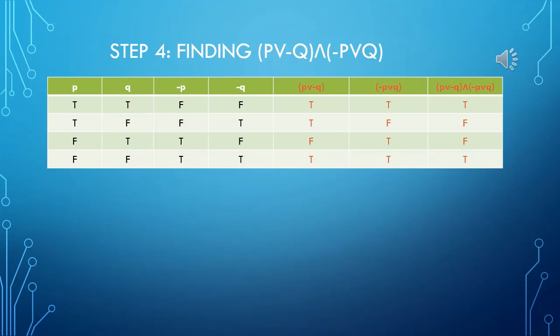First row T and T is T, T and F is F, F and T is F, and T and T is true. So here we have the final answer of P or negative Q and negative P or Q.